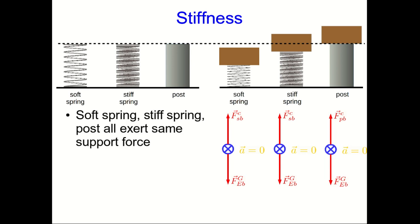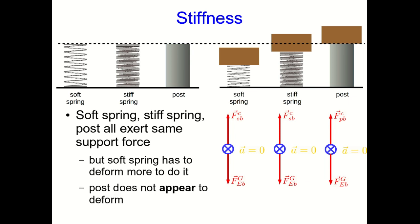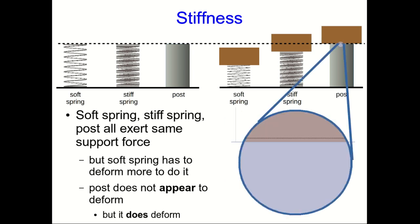So the soft spring, stiff spring, and post all exert the same support force. The difference is that the soft spring has had to deform much more to be able to provide a force that large. The post doesn't appear to have deformed at all, but in fact if you do very careful measurements you would find that the post has compressed just a little bit.